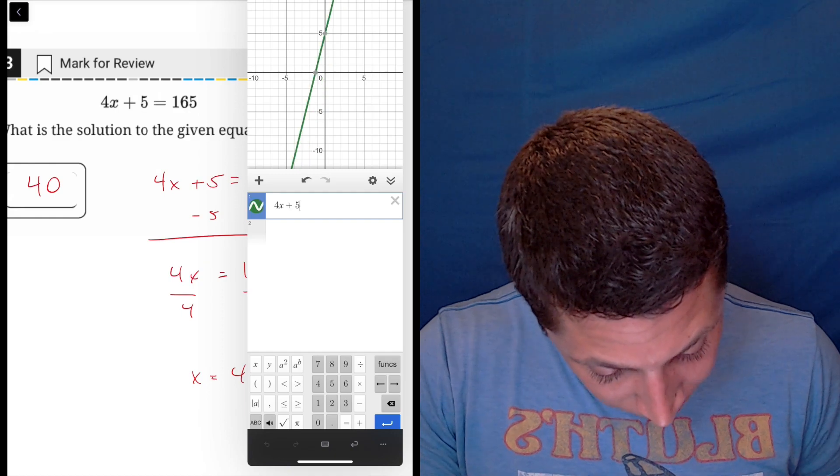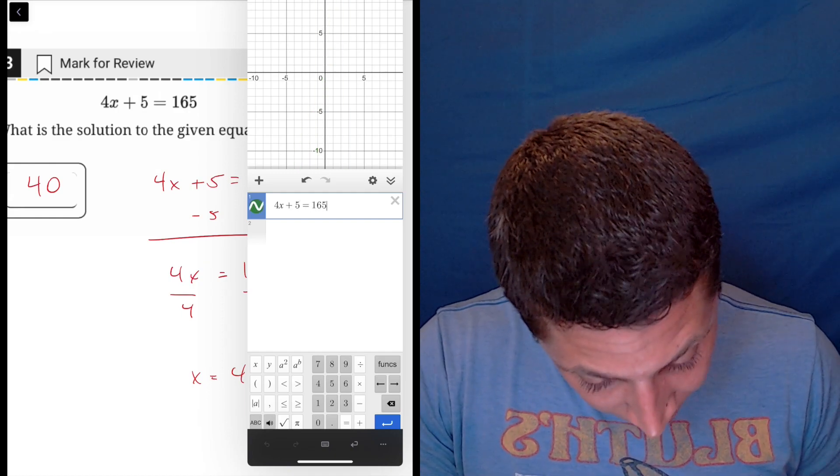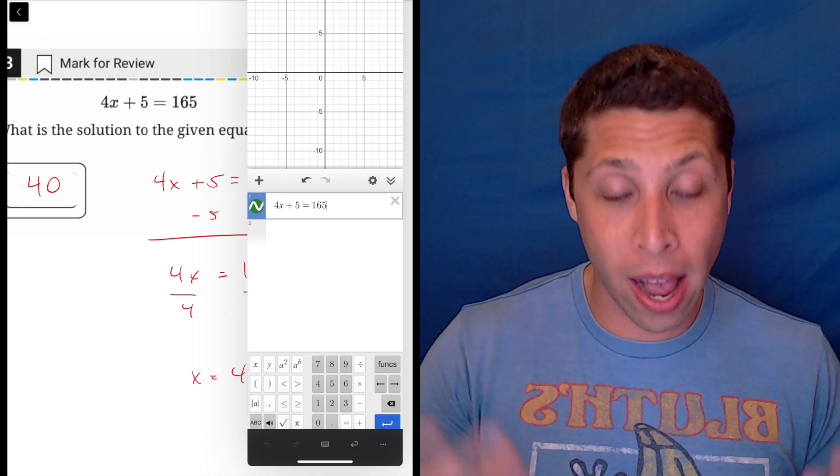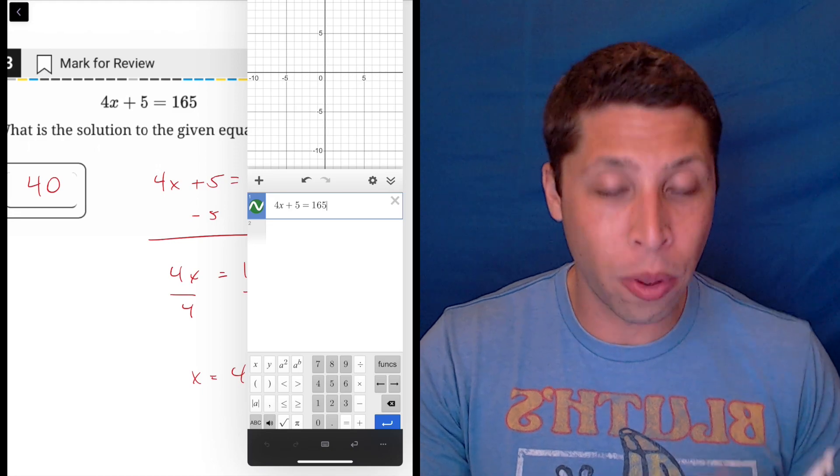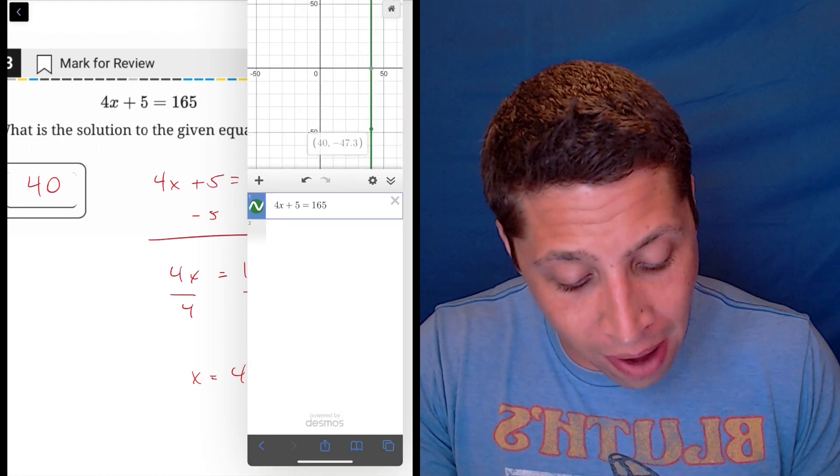4x plus 5 is equal to 165. So you see the green line disappeared as I was typing because 165, I mean 40, these are big numbers. So the downside of graphing this is that you're going to have to zoom out and try to find the answer.